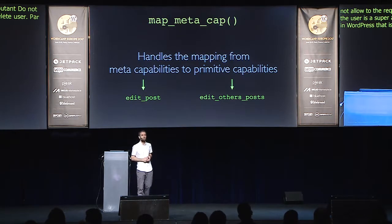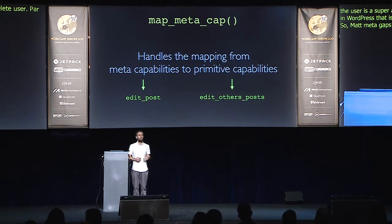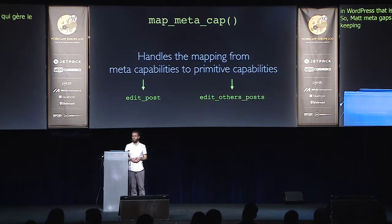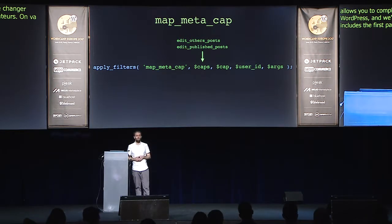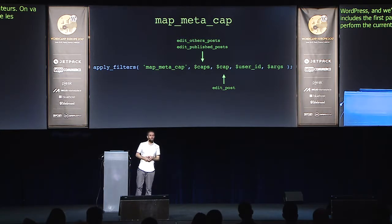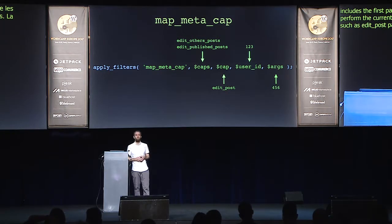map_meta_cap is a really powerful function — it's kind of a gatekeeper to roles and capabilities in WordPress, handling the mapping of meta capabilities to primitive capabilities. The most interesting part is the very last line: there's a filter at the end called map_meta_cap, which opens up a whole world of possibilities. This is probably the most powerful filter in WordPress because it allows you to completely change the way users can perform actions. The filter's first parameter includes the list of capabilities required to perform the current check, then the meta capability passed in such as edit_post, the current user ID, and any context like the post ID.